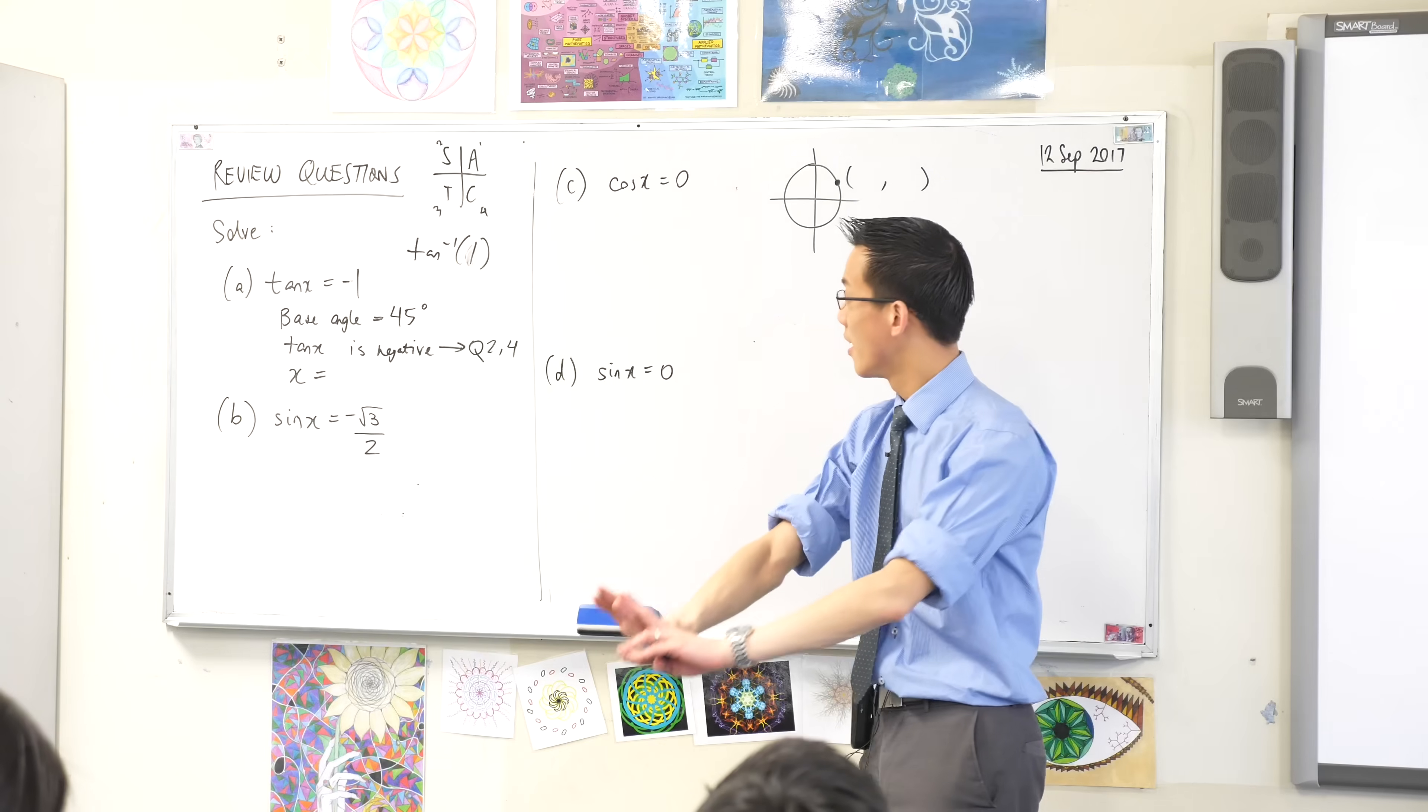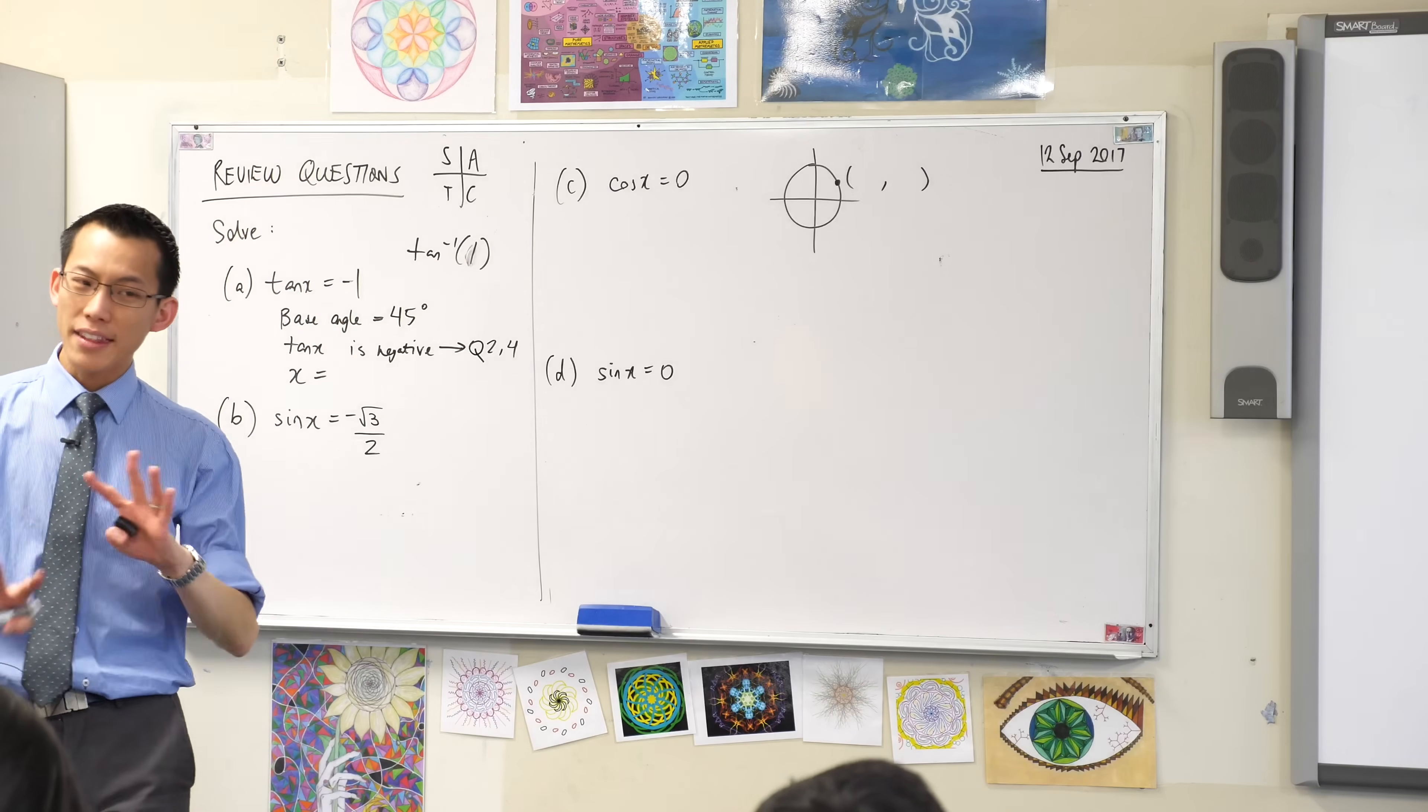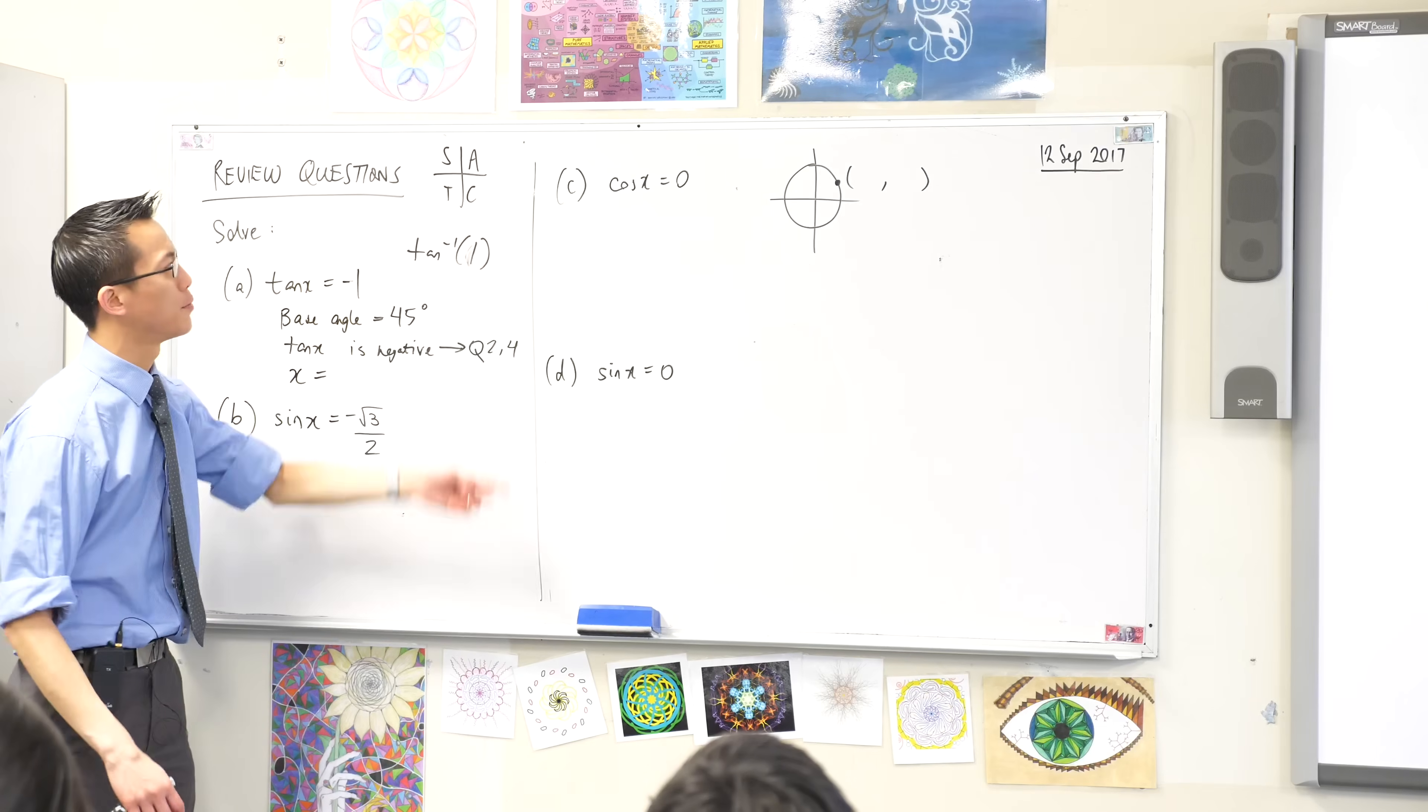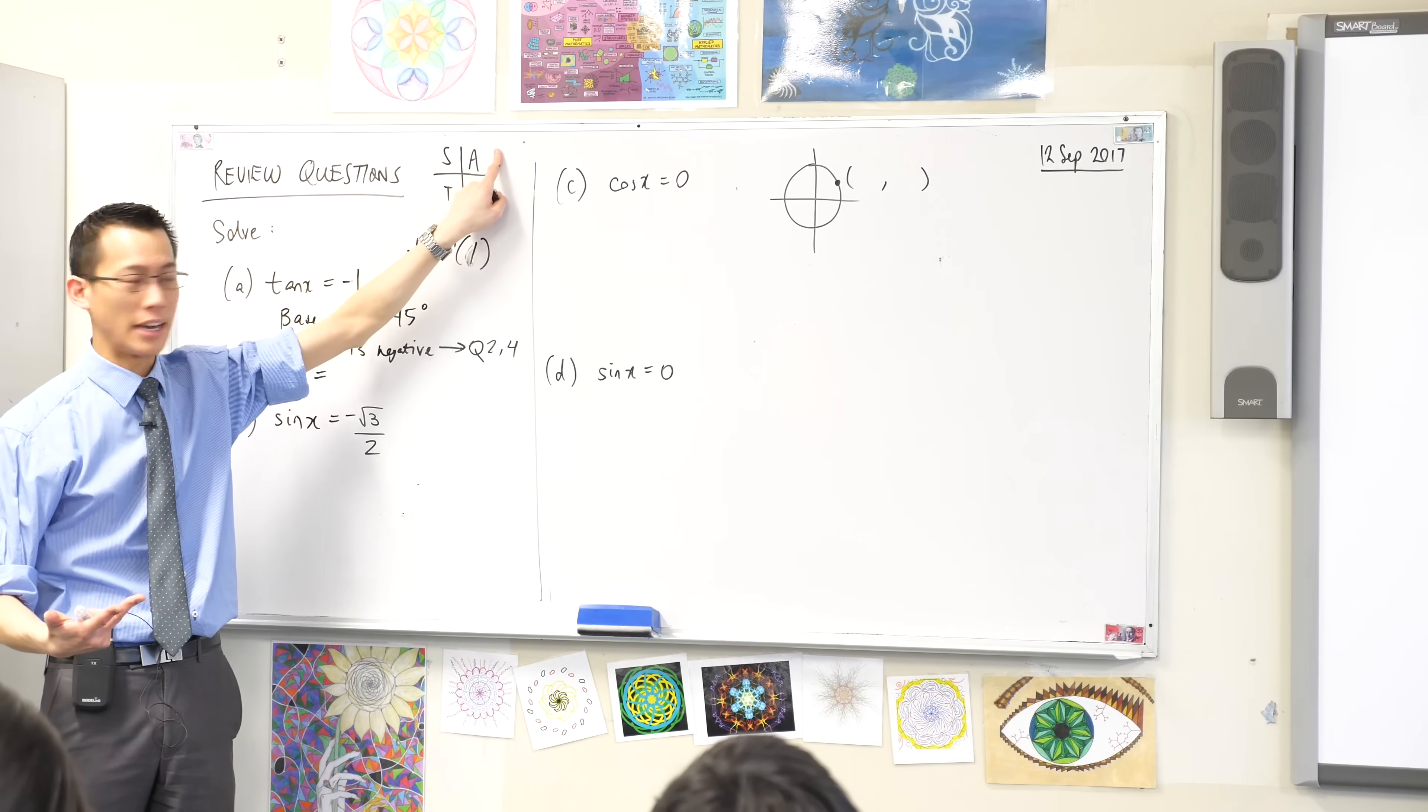Okay, so let me explain. So this comes down to understanding what this diagram means. Okay, let me just get rid of these numbers for a second. The A and the S and the T and the C, what they refer to is, hey, which of these trig functions is positive in which quadrant? Okay? So for example, in the first quadrant, sine of any angle in there, cos of any angle in there, and tan of any angle in there, you'll always get a positive. Okay?